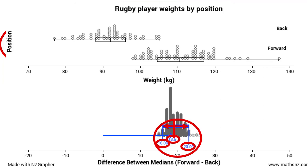I'm expecting that the median weight of forwards is about 18.5 kg more than the median weight of backs — that was from our sample. How accurate is that? Well, the difference could be as low as 16 kg or as high as 23 kg. Remember, the 18.5 is our sample value; this is giving us an estimate for our population. Back in the population of all New Zealand and South African rugby players across all time, we expect the median weight of forwards to be between 16 and 23 kg more than the median weight of backs.